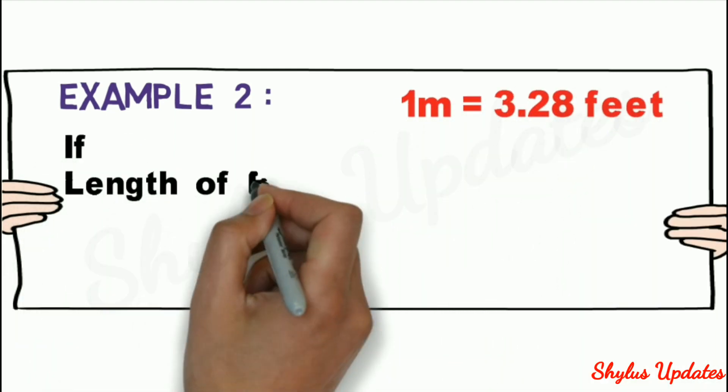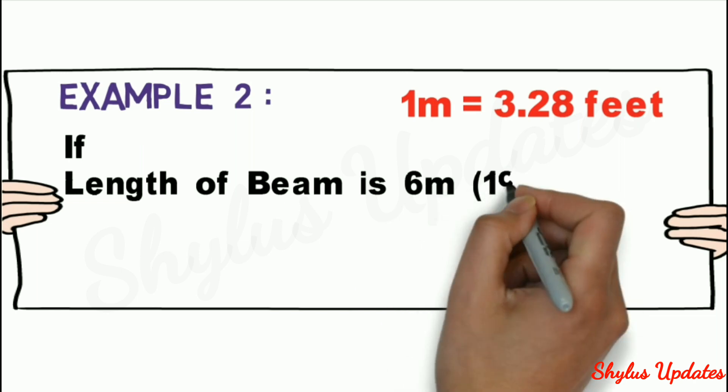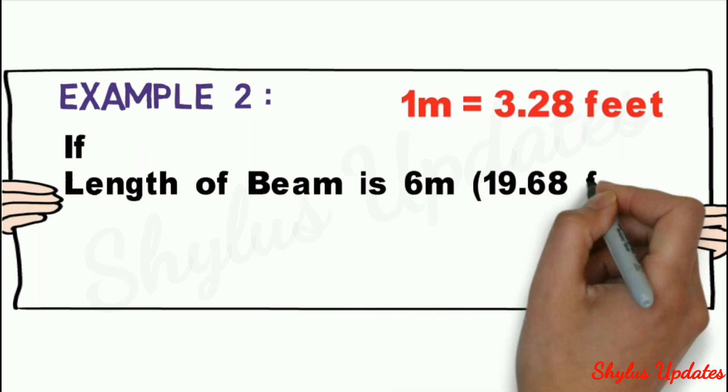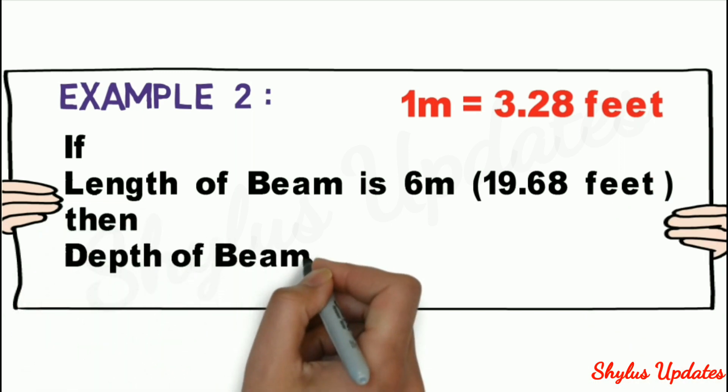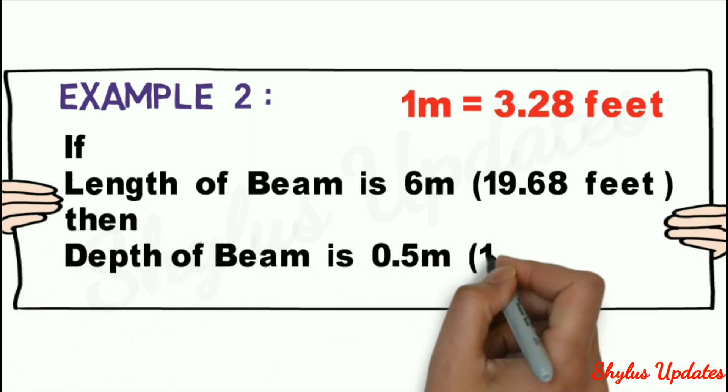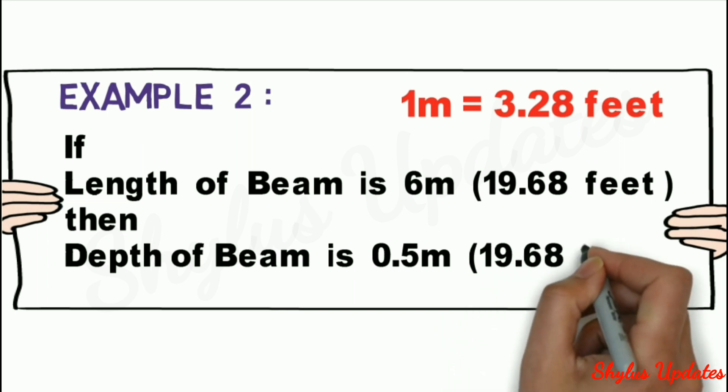If length of beam is 6 meters, that is 19.68 feet, then depth of beam is 0.5 meters, that is 19.68 inches.